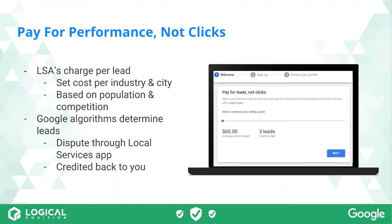One of the best parts of this LSA program is that you get to pay for performance rather than clicks. There's really transparent pricing based on a set cost for your service and where you're located. For example, plumbers in Portland are set at about $20 per lead. Google also has an algorithm that looks at the quality of incoming leads through the sales app — call duration and similar factors — and gives you the ability to dispute leads you don't think are actually qualified.